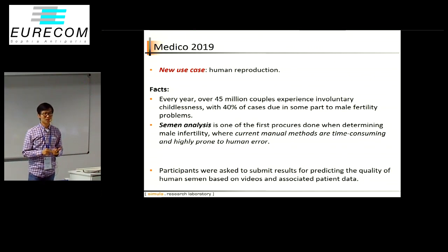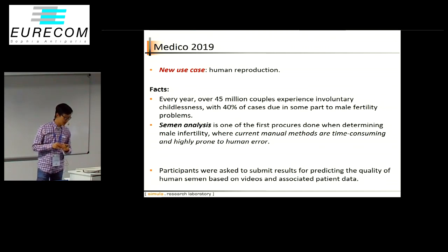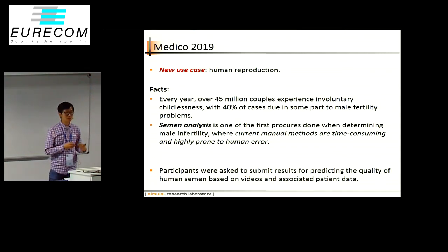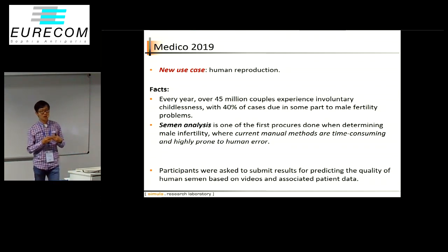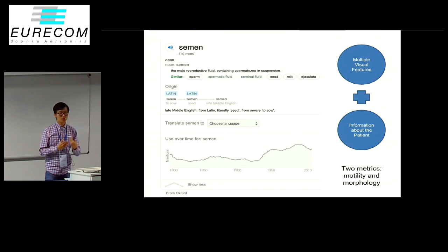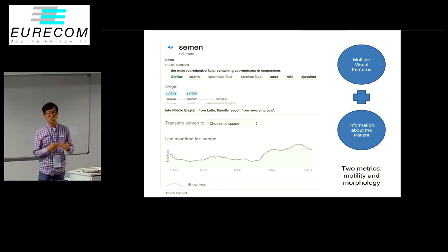We are running our task on human reproduction. Every year, around 45 million couples face problems having a baby, and around 40% of cases are due to male fertility problems. The very common way to analyze these things is semen analysis, to understand how healthy the semen is and what treatment options exist, combining visual features with patient information like BMI index and other criteria.